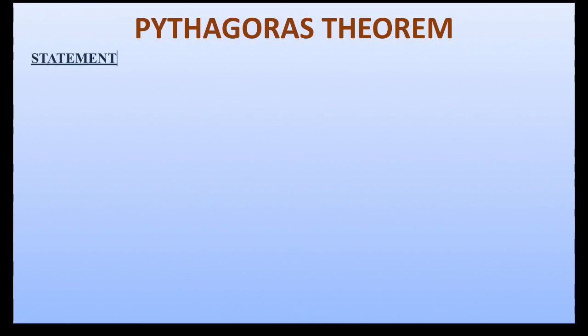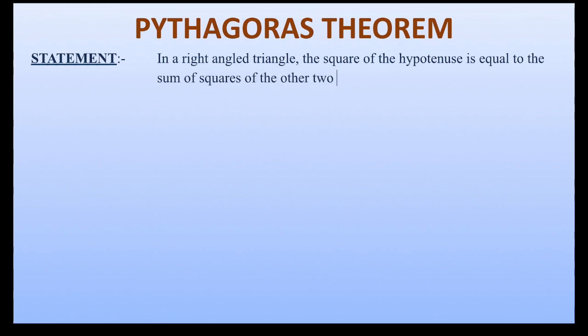The statement of the Pythagoras theorem says that in a right angled triangle, the square of the hypotenuse is equal to the sum of squares of the other two sides.